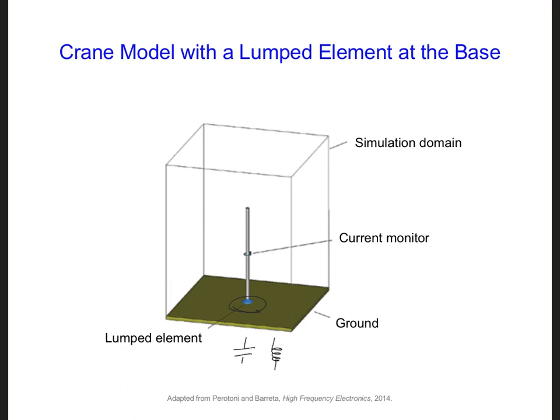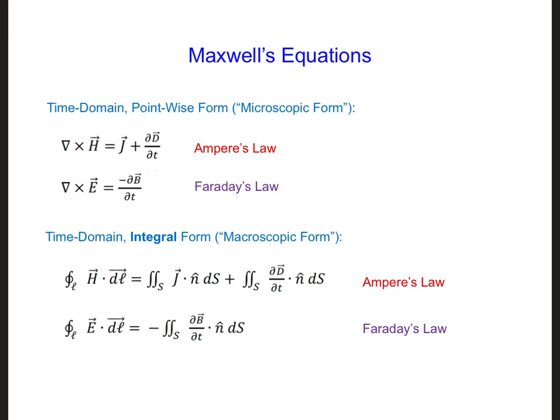Since we are using FDTD to solve Maxwell's equations, we can model a capacitor or an inductor in an FDTD model if we can figure out how to account for the capacitor or the inductor in Maxwell's equations. For convenience, here are Maxwell's equations, in both the point-wise and the integral form. You can consider either form. What do you think is the best way to account for a capacitor or an inductor in Maxwell's equations?